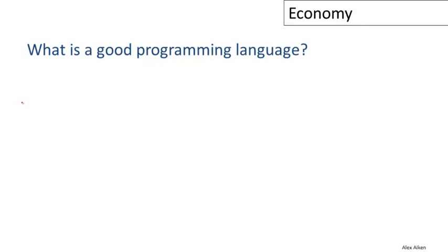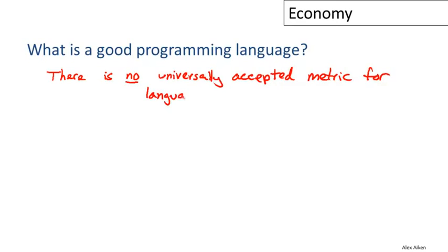Finally, we can ask ourselves, what is a good programming language? And here, unfortunately, the situation is much less clear. I would just make one claim that there is no, and I'll emphasize no, universally accepted metric for language design. And what do I mean by that? Well, I guess the most important part of this statement is the universally accepted bit.